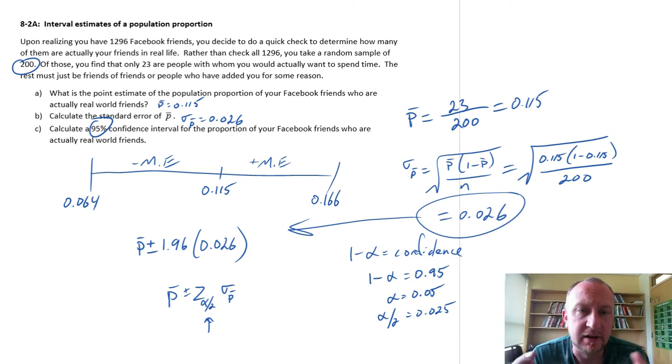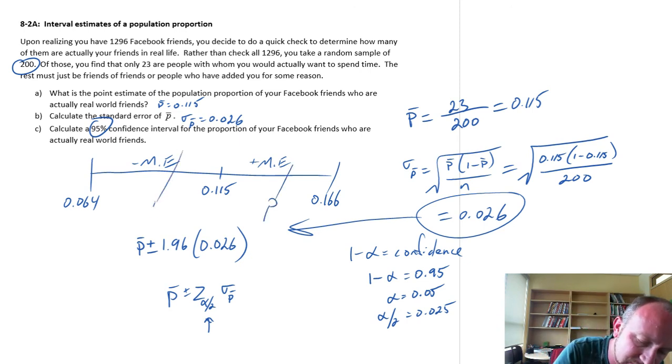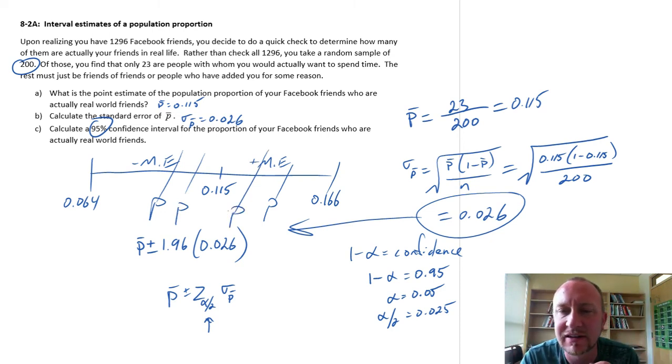So there's our 95% confidence interval estimate for the proportion of my Facebook friends who are actually my friends. Now, I'm lying a little bit. I don't actually have, I don't want to give the impression that I have so many Facebook friends. Imagining we have 1,296 Facebook friends. The true proportion of those 1,296 Facebook friends who are my real friends, is between roughly 6.5% and 16.5%. So that true population proportion, somewhere in here. We just don't know where, 95% of the time, or we're 95% confident.